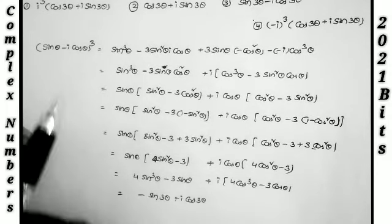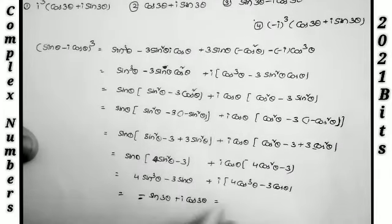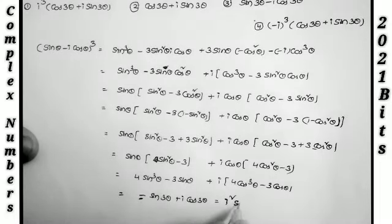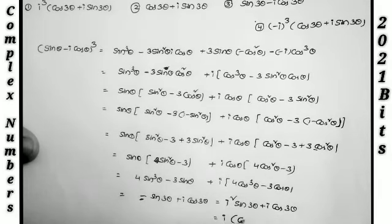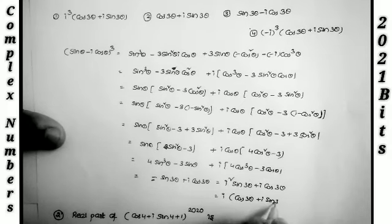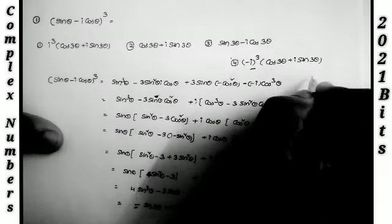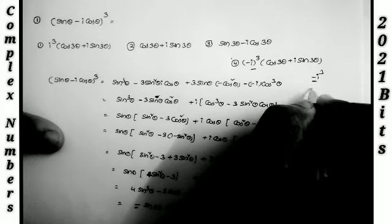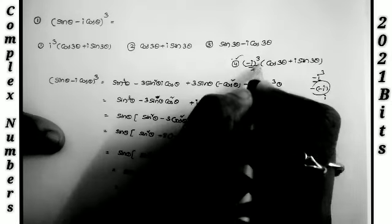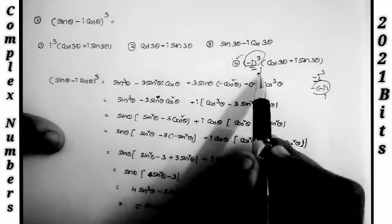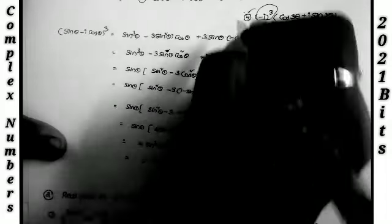The answer −sin 3θ + i cos 3θ is not directly listed among the options. So I rewrite −1 as i², giving i²·sin 3θ + i cos 3θ = i(cos 3θ + i sin 3θ). Checking the last option: −i³ = −(−i) = i, so the expression equals i(cos 3θ + i sin 3θ), which matches the last option.